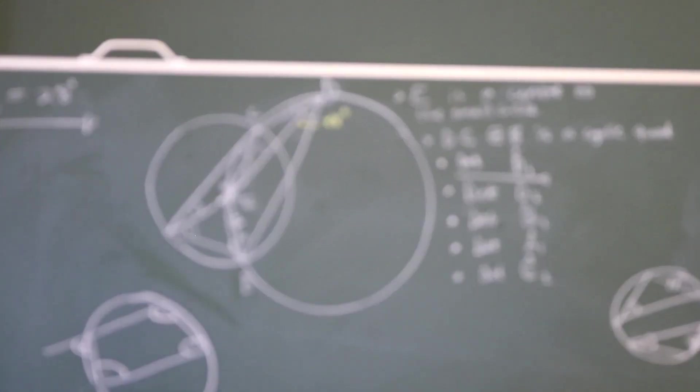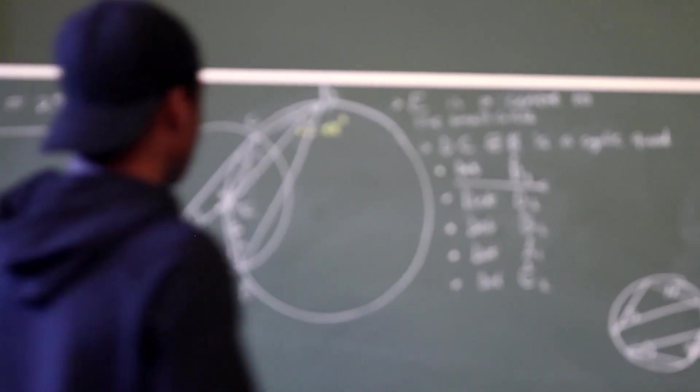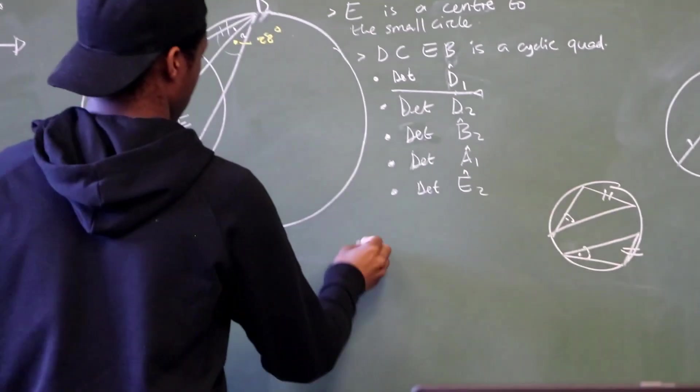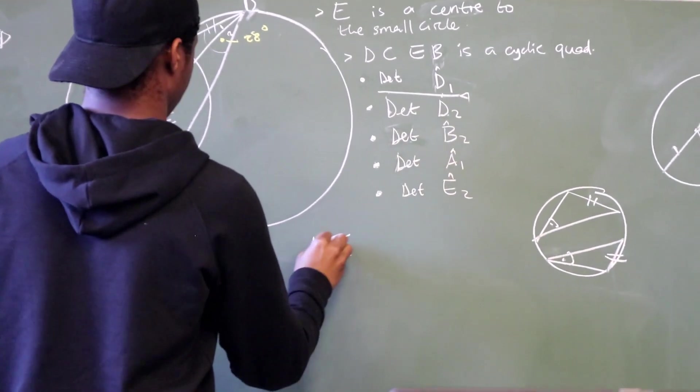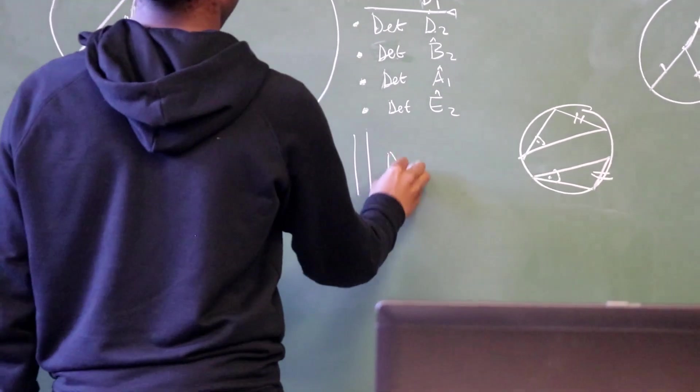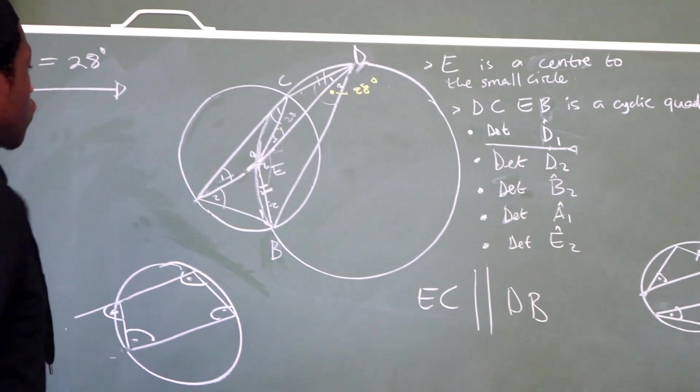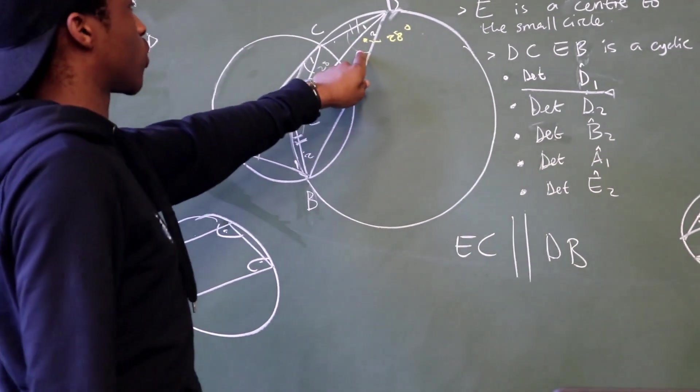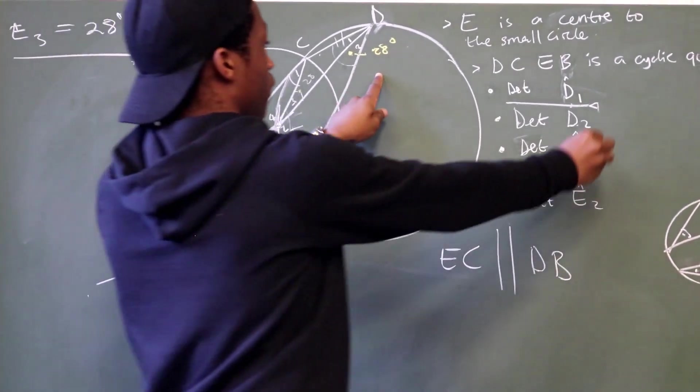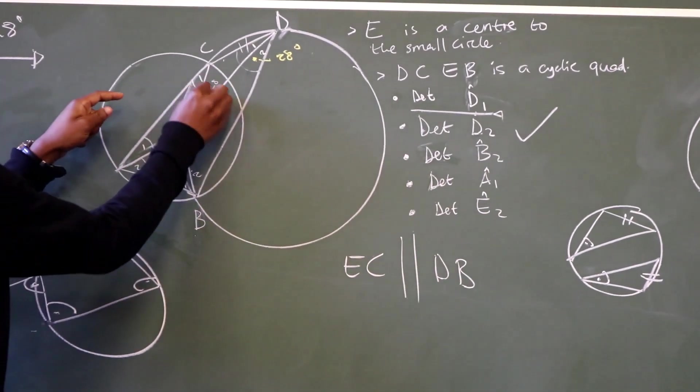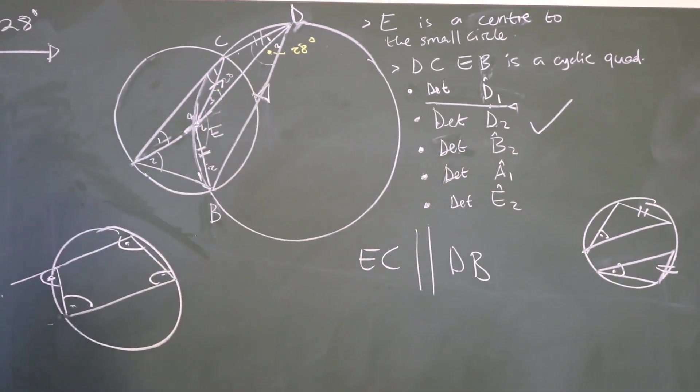Meaning we can see that EC is parallel to DP. If we were to prove why is EC parallel to DP, we've got these two alternate angles because we've just proven that D2 is equal to 28 degrees. Meaning we've calculated this angle already. So now we've deduced that EC is parallel to this one.